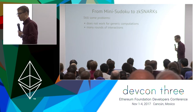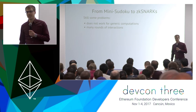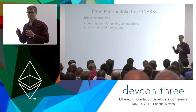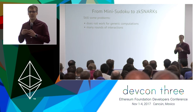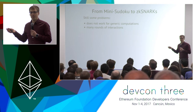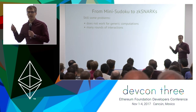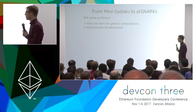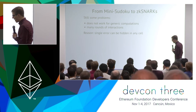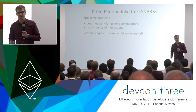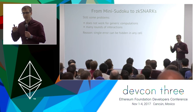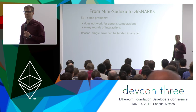What is more problematic is that Mini Sudoku takes many rounds of interaction. This is especially problematic for a blockchain where you want to create a transaction, send it to the blockchain, and have the blockchain verify it without many rounds of interaction. The reason we need so many rounds is that a single tiny error could be hidden in any cell of the Sudoku board — so we need many rounds to increase the likelihood of finding that hidden error.